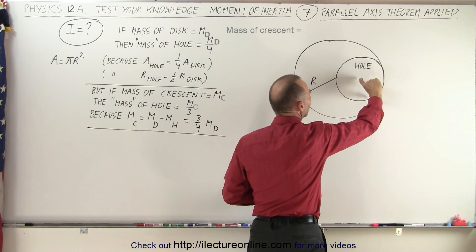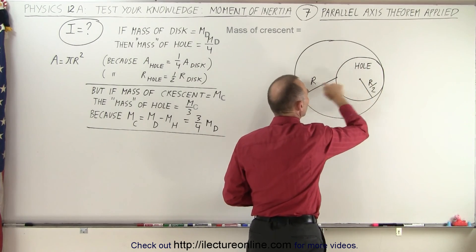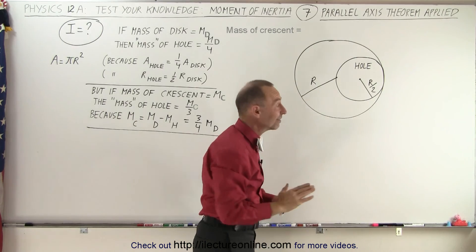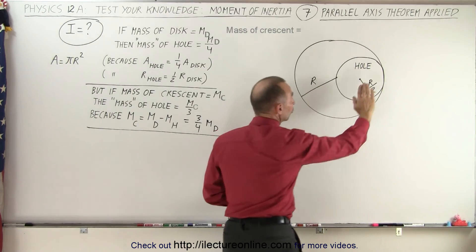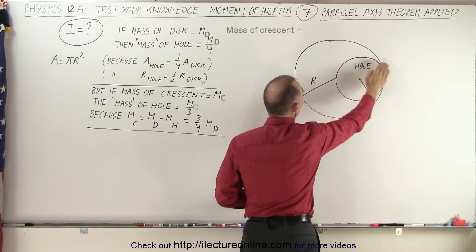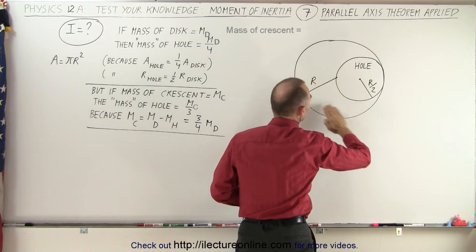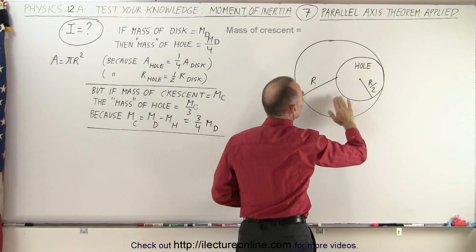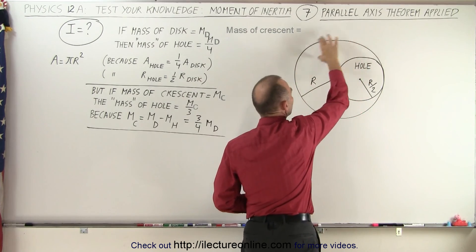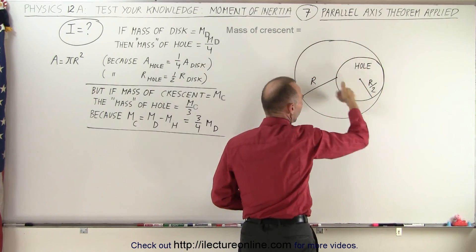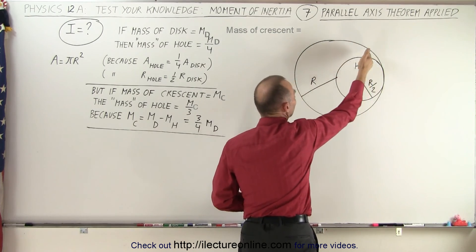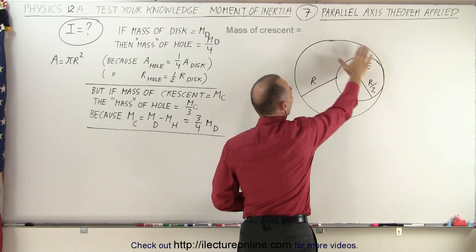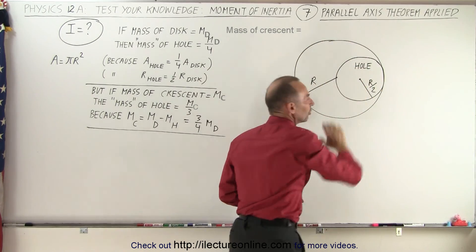The radius of the hole is half the radius of the disc, which means that the surface area of the hole is one-quarter the surface area of the disc. That means the remaining crescent, after the hole is cut out, is three-quarters the area of the original disc.